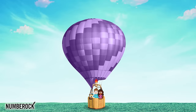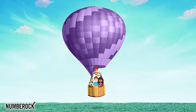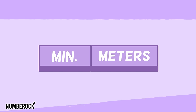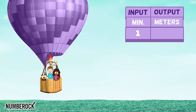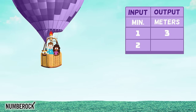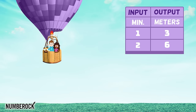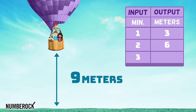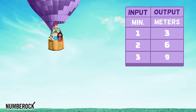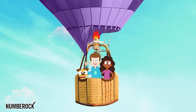We're in a hot air balloon going up to fly. The table shows our time and height in the sky. At one minute we're three meters off the ground, at two minutes we're six meters up staring down. At three minutes we're up nine meters high. What's the rule that shows our place in the sky?